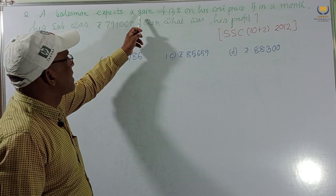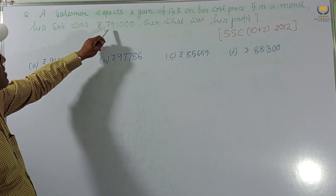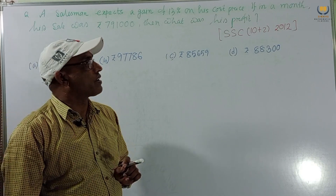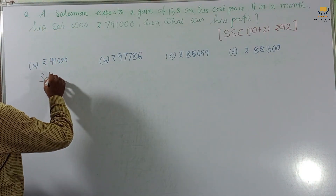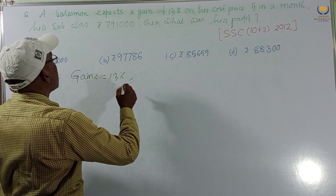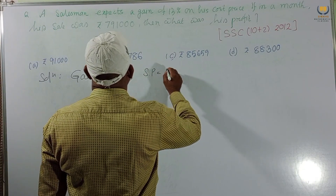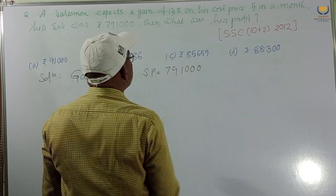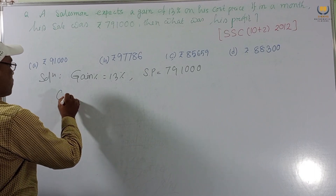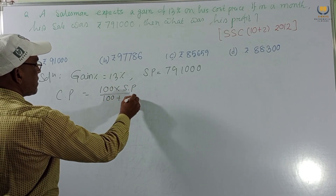Next problem: A salesman expects a gain of 13 percent on his cost price. In a month his sales were rupees 79,100. What was his profit? Given: gain percent = 13%, SP = 79,100. We need to find the cost price first using: CP = (100 × SP) / (100 + gain percent).